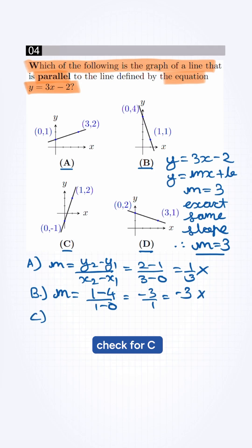So we check for C. m is equal to 2 minus of minus 1 by 1 minus 0, which is 3 by 1, which is 3.